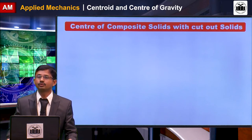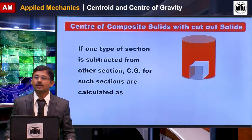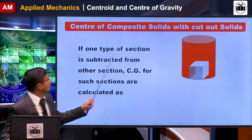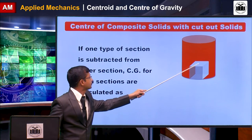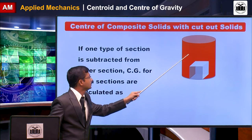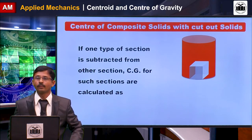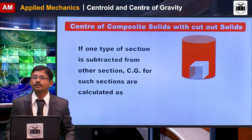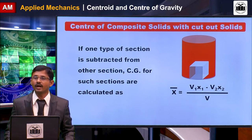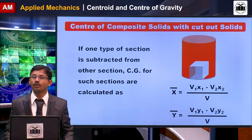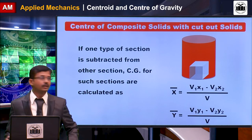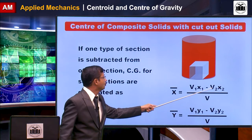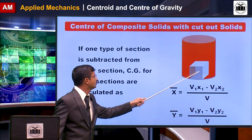For center of gravity of composite solids with cut solids: if one section is subtracted from another — for example, a cube is removed from a cylinder — this is called a cut solid. The CG for such sections is calculated using: x-bar = (V1·x1 − V2·x2) / total volume and y-bar = (V1·y1 − V2·y2) / total volume. In the second term, V2·x2 and V2·y2 are subtracted because we are removing that particular solid.